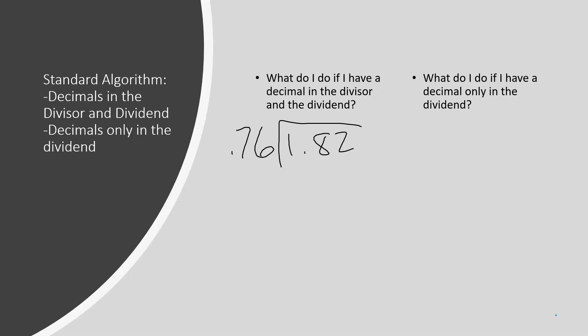Before we can begin to divide, we will need to make our divisor a whole number. First, where is the understood decimal for a whole number? That's right — it will move all the way to the right and go behind the last digit. So to do that, we'll need to move our decimal one, two places to the right. Whatever you do to the divisor, you also have to do to the dividend, so we will move our decimal one, two times in our dividend also and take it to the top of the division bar.